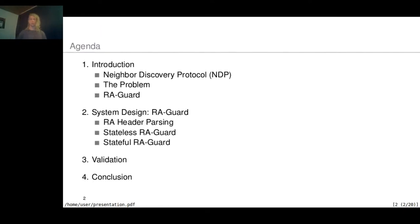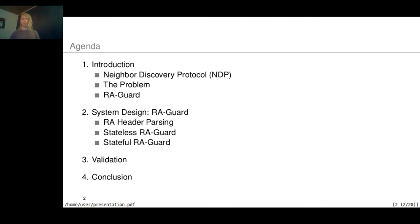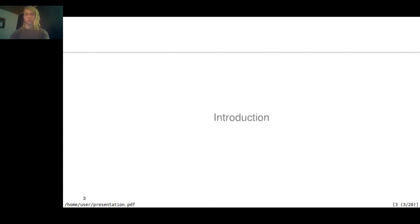This talk is structured as follows. First, I will introduce the Neighbor Discovery Protocol NDP — how it works, what the problem is, and how to address it with the RA-GUARD approach. In the second part, I will explain the system design of our RA-GUARD implementation, how the router advertisement headers are parsed, and how the stateless and stateful RA-GUARD modes work. Next, I will show how we validated the implementation using an attack scenario, and finally I will give a conclusion.